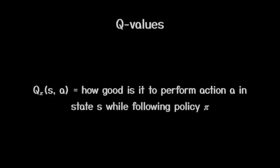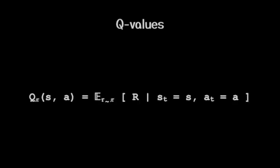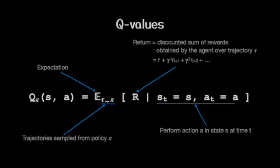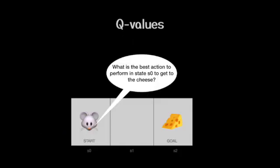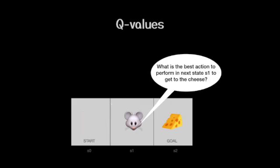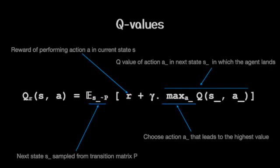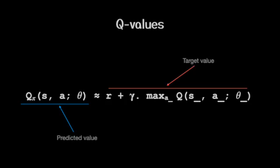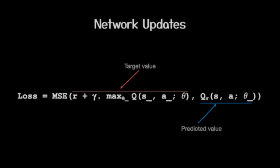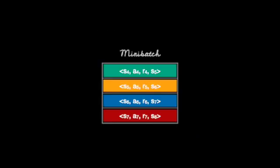Onto the final piece of the puzzle — how does the agent learn? Before we jump into this, let's recap our understanding of Q values. Q values numerically indicate how good a certain action is in a given state by computing the total discounted reward the agent can expect in the future if it follows the current policy. Another way to think about it is that after taking the best possible action in the current state, the agent must then continue to take the best possible action in the next state it lands in, which leads to this recursive formulation. Since we do not have a ground truth in the RL setting, this recursive formulation allows us to compute the target values, which can then be used for updating the online network. We use the standard mean squared error loss on the target and the predicted Q values for the mini-batch of experiences sampled from the replay memory.